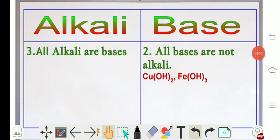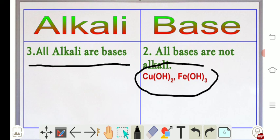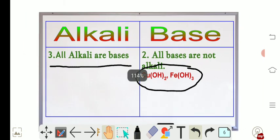The third difference: all alkalis are bases, but all bases are not alkali. For example, CuO and Fe₂O₃ are bases but they are not alkali. So there are three differences between alkali and base.